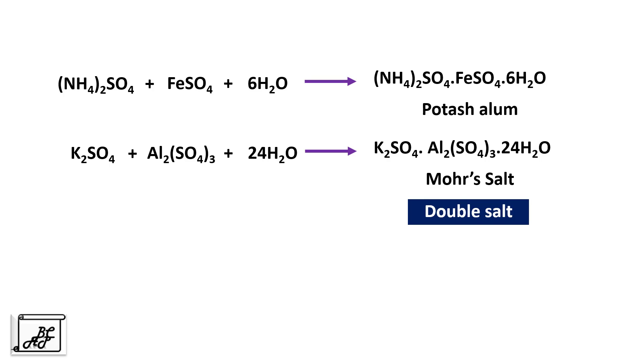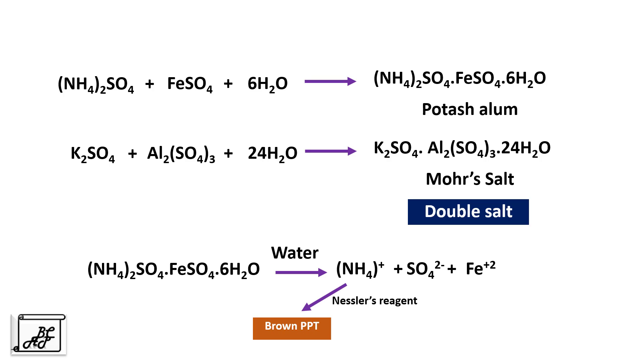These are not the coordination compounds. For example, if this potash alum is added to water, all of these ions will get separated from each other. Now if we carry out the semi-micro qualitative analysis, the solution if it is tested with Nestler's reagent, it will give brown PPT that indicates the presence of ammonium ion. Now to the same solution if we add barium chloride solution, it will turn into white precipitate. That indicates presence of sulphate ion. It will also give a test for ferrous ion. With the help of dilute HCl and KCNS, it will give a blood red colour.